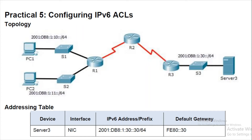Hello everyone, welcome to Practical 5 on configuring IPv6 ACL. This is the topology given — we have to deal with all IPv6 addresses. There are three routers and five different networks, but the table is not precisely given, so we'll cover how to form the networks, define the addressing, and set up the routing scheme.